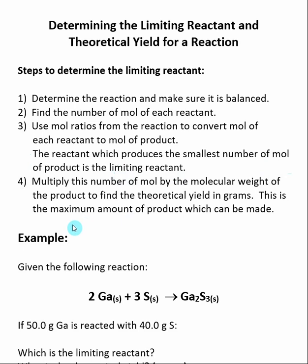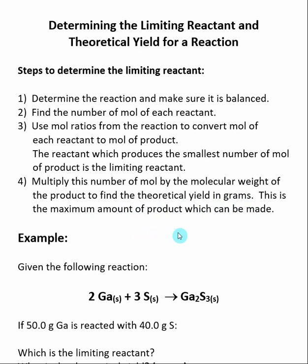The theoretical yield is in grams, not in moles. So even though we've determined how many moles of product are made, we have to do a last step where we convert the moles of product to grams of product. We take the number of moles of product that can be made if we use up the limiting reactant, and multiply that by the molecular weight of the product, which gives us a number in grams — that's our theoretical yield. This is the maximum amount of product which can be made.